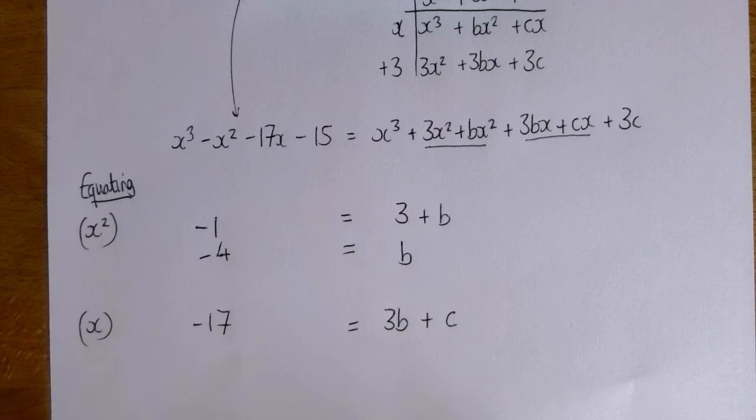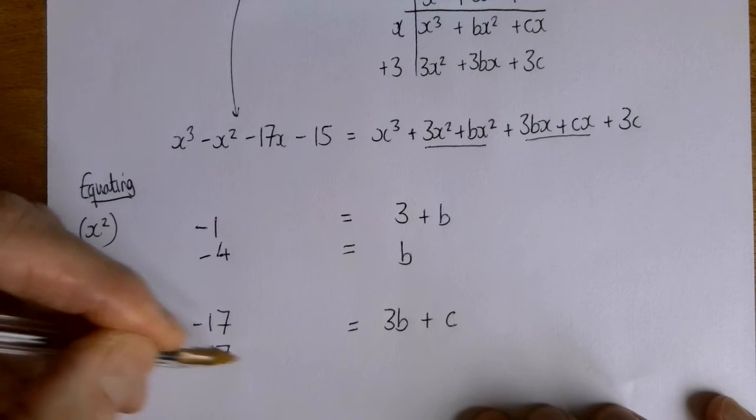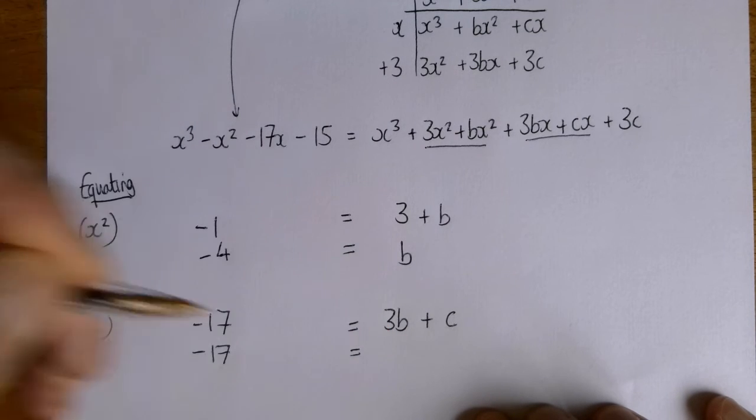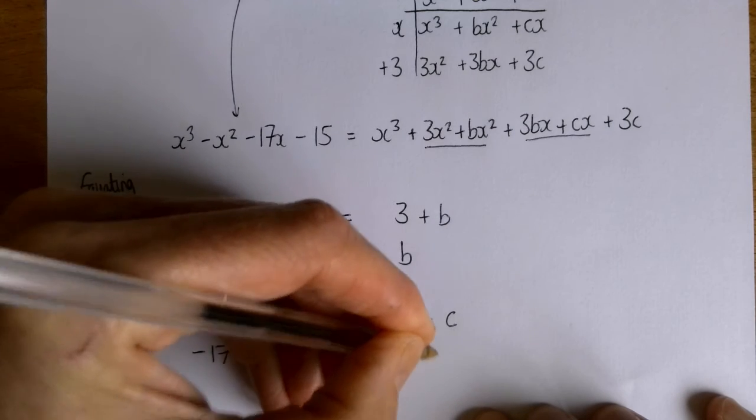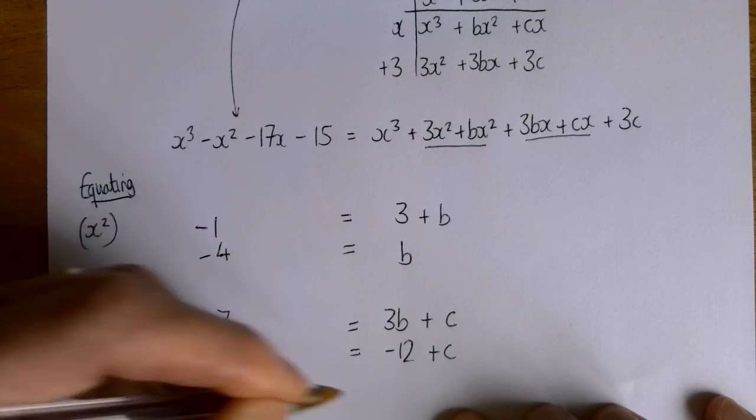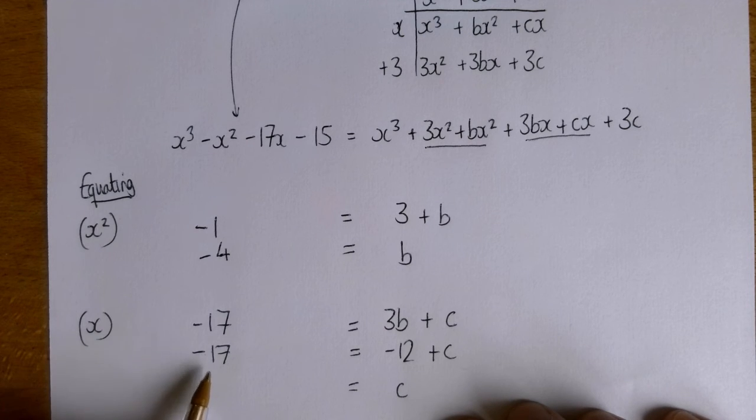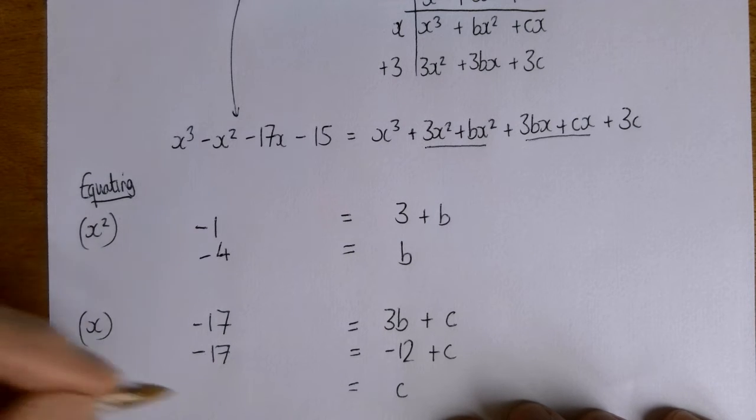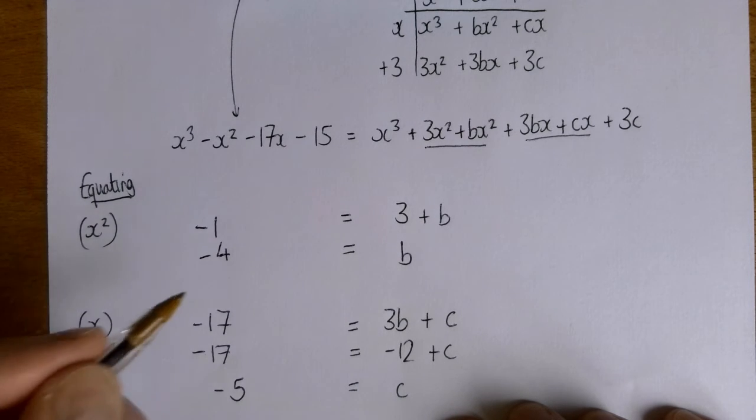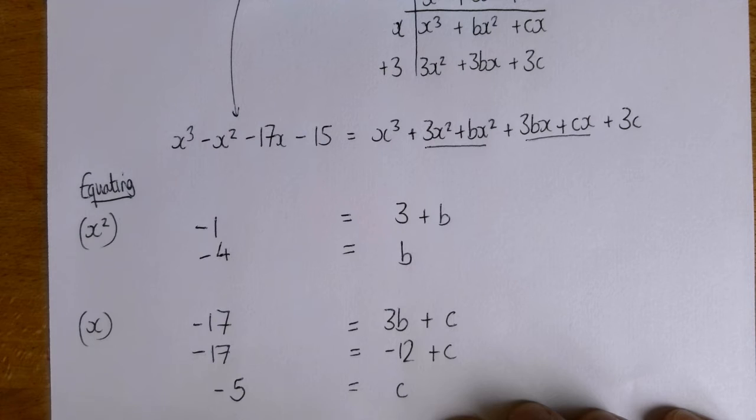I've just worked out that b is minus four. So I can rewrite that as three times minus four will be minus 12. And so I know that c, well, to get rid of the minus 12, I've got to add 12. Minus 17 add 12 is minus five. And so I've got my values of b and c.